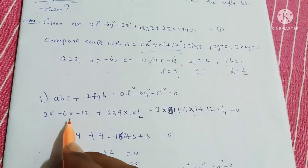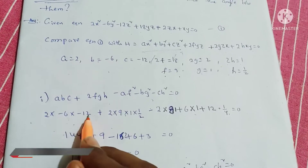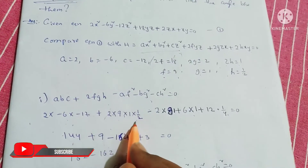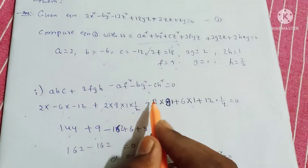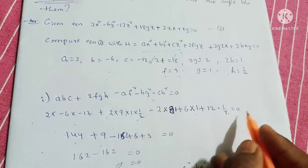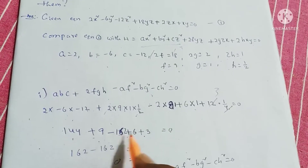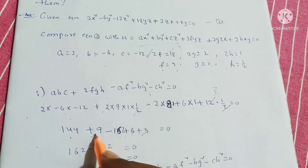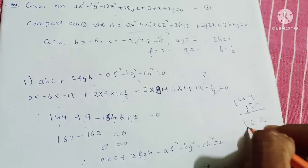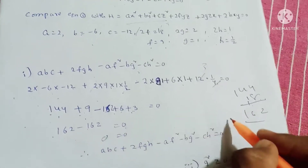Calculating: 2 times minus 6 times minus 12 equals 144. Plus 2 times 81 minus 162, plus 6 times 1 equals 6, plus 12 times 1 by 4 equals 3. So 144 plus 18 minus 162 equals 162 minus 162 equals 0. The first condition is satisfied.